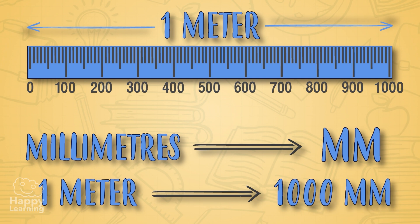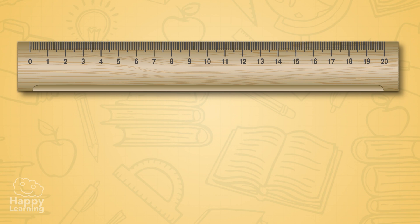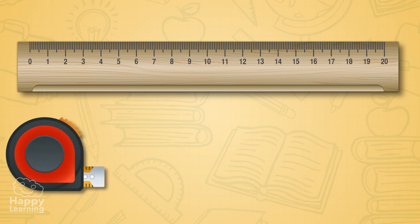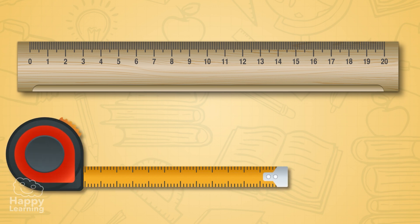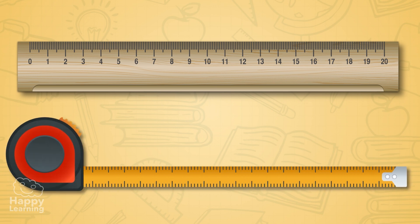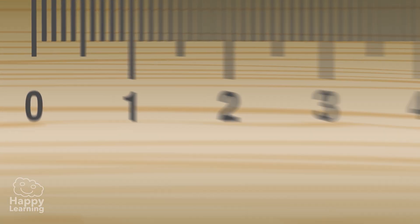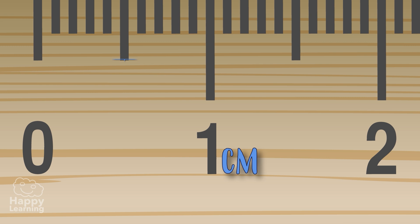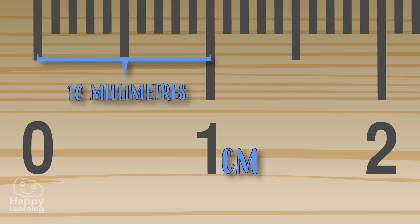To measure these smaller units, we use a ruler or a metre stick, which, as you can see, divides each centimetre into 10 equal parts — in other words, into millimetres.